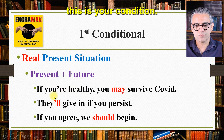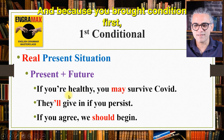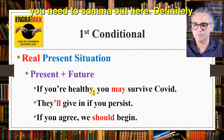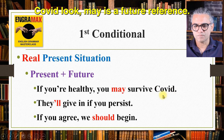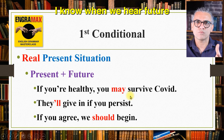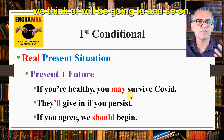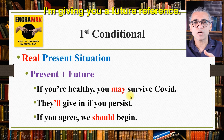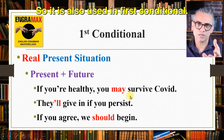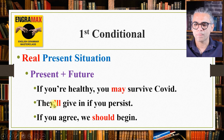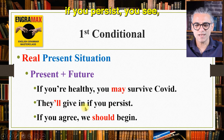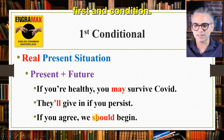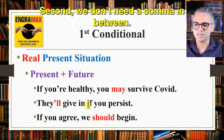We have three examples. If you are healthy — this is your condition, and because you brought the condition first, you need a comma here — you may survive COVID. 'May' is a future reference; I know when we hear 'future' we think of 'will' or 'be going to', but 'may' also gives a future reference, so it is used in first conditional. Another example: they'll give in if you persist. Because we brought the consequence first and the condition second, we don't need a comma in between.